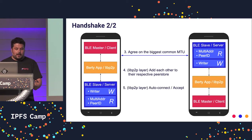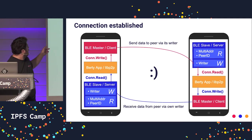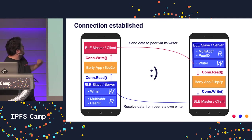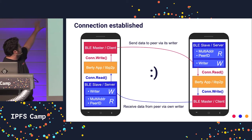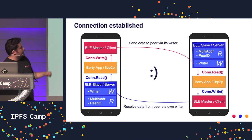They will auto-connect and accept. Then the connection is established. As you can see, when LibP2P calls ConWrite, it will talk with the GATT master, which will write on the writer of the BLE slave of your peer. This will trigger the connection read, and vice versa.